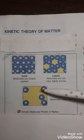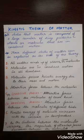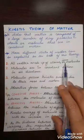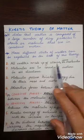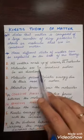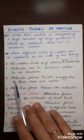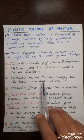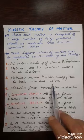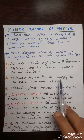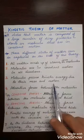Let us understand the postulates of the kinetic theory of matter. The first postulate is: all matter is made of a large number of extremely small particles called molecules, atoms, or ions. The second postulate is: molecules are always in a state of constant random motion in all possible directions. The third postulate is: molecules possess kinetic energy due to their mass and motion. Kinetic energy is the energy which a body possesses due to its motion.